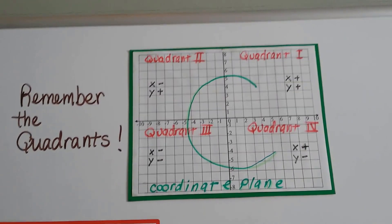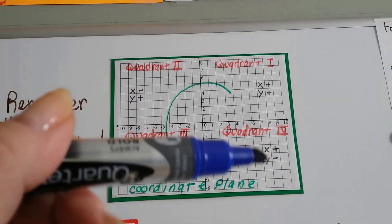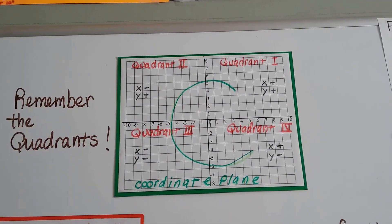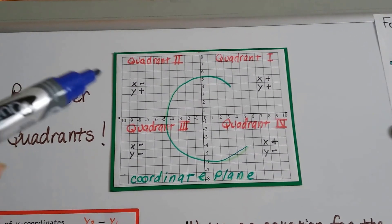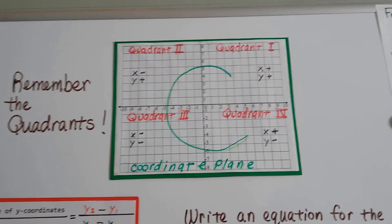And also remember the quadrants of the coordinate plane. Remember it makes the shape of a c for coordinate. It starts up here in this corner as quadrant 1, then 2, then 3, then 4. And it goes around in the shape of a c. I don't want you to think that that's quadrant 1. It starts in the shape of a c for coordinate.